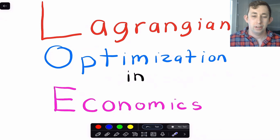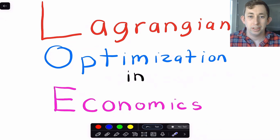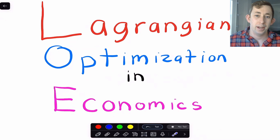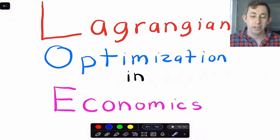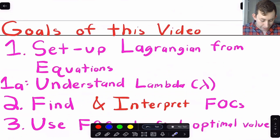Hi guys, welcome back to In Case of Econ Struggles. Welcome to another math struggle. Today we're going to start talking about Lagrangian optimization in economics. This is going to be a couple-part series, just to build up to dynamic optimization using Lagrangians. What I've seen recently is a lot of people struggling with Lagrangian optimization, including setting it up, taking the first order conditions, and interpreting the first order conditions.